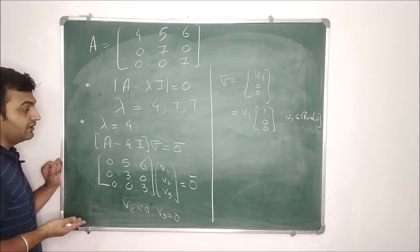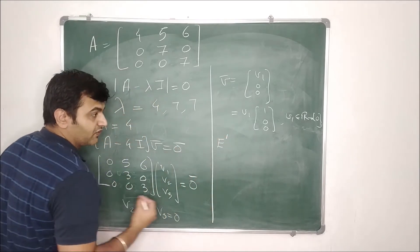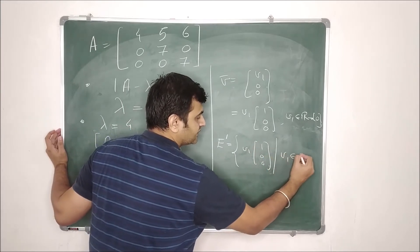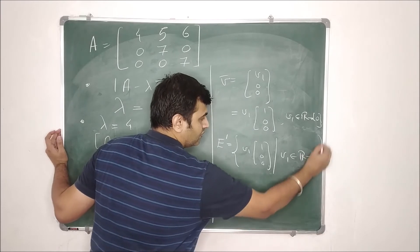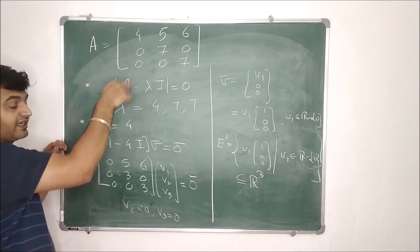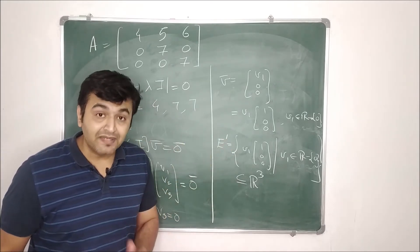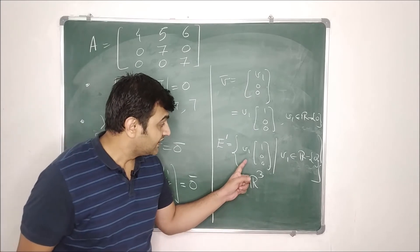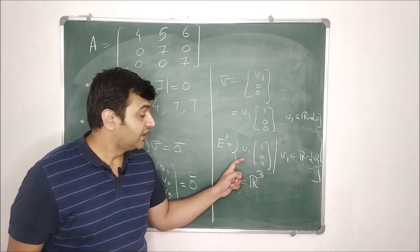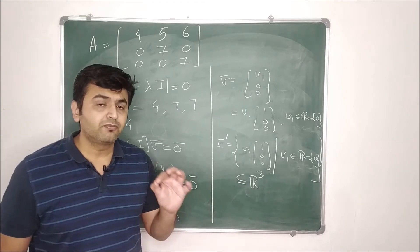Once you find the eigenvector, the notion of eigenspace comes in. If I call E-prime the collection of all eigenvectors for lambda equal to 4, where V1 is a non-zero real number, you can see this is clearly a subset of R3. But is it a subspace of R3? No, it is not a subspace, because the zero vector is not included. In a subspace, you should always have the zero vector.